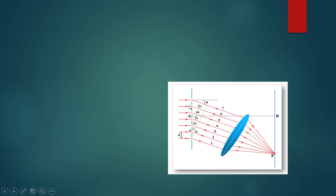Looking at the diagram, we have seven slits. It is one slit, two, three, four, five, six, seven — the number of lines. Students, observe the distance D between two adjacent slits — the distance between one slit and the next.